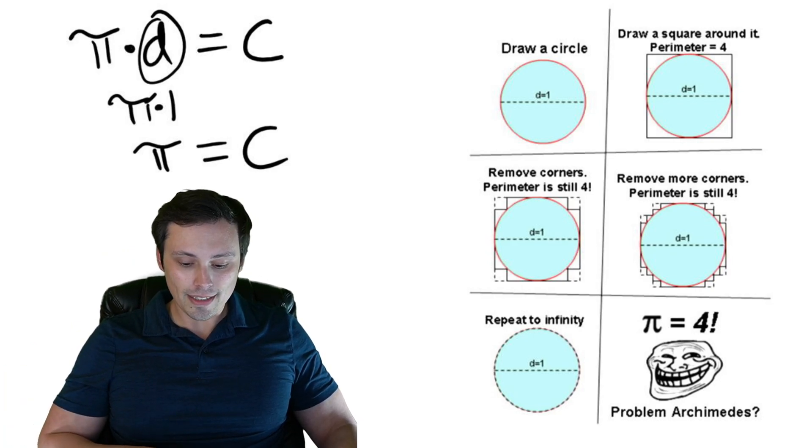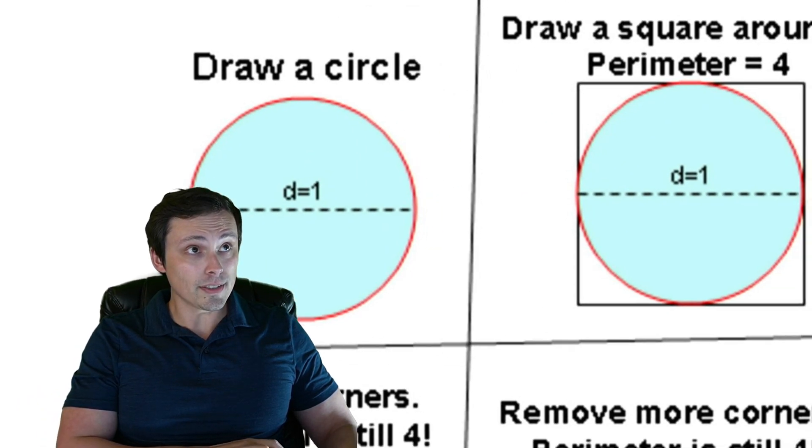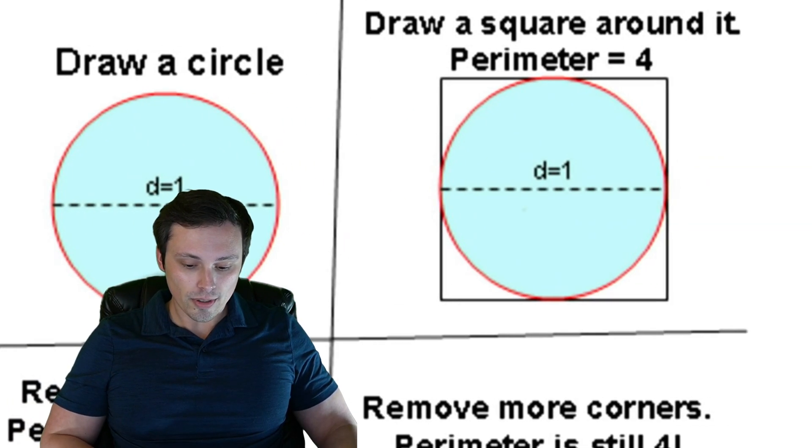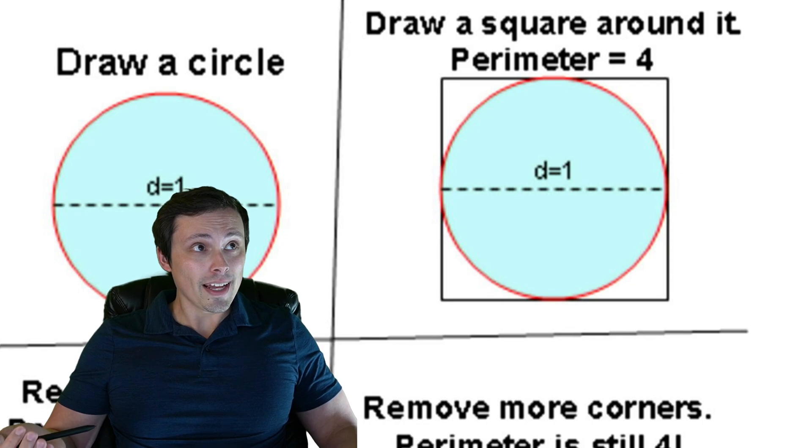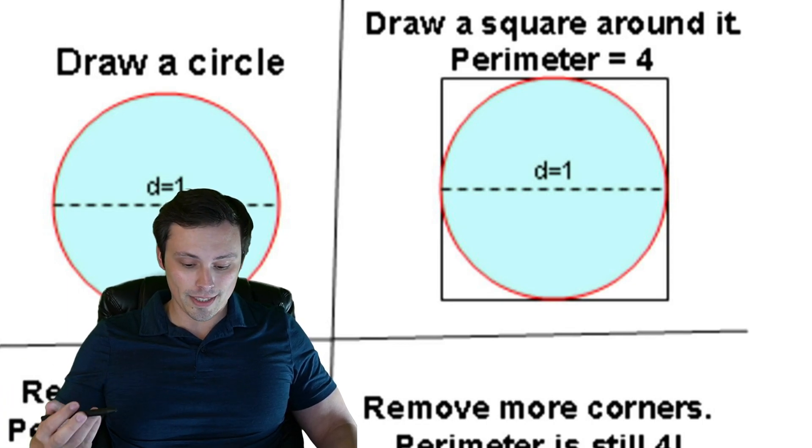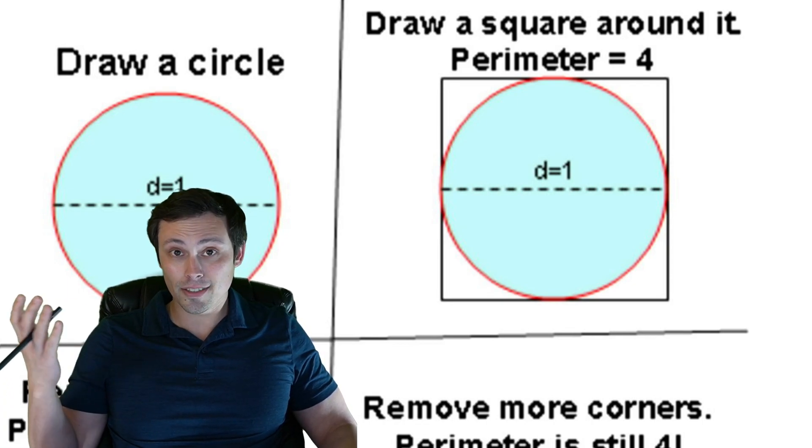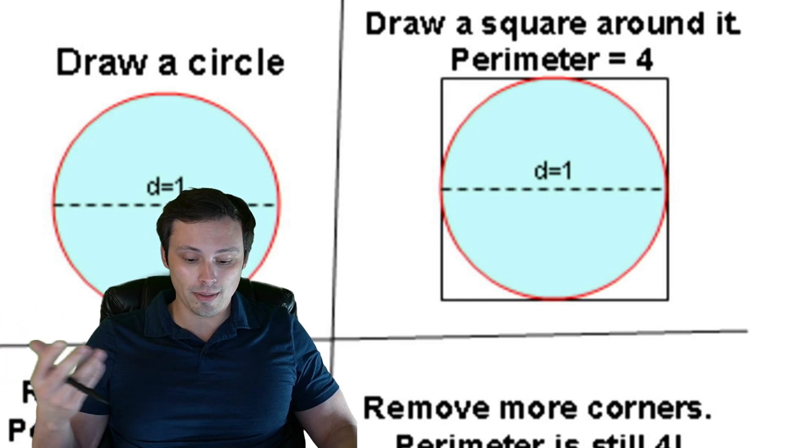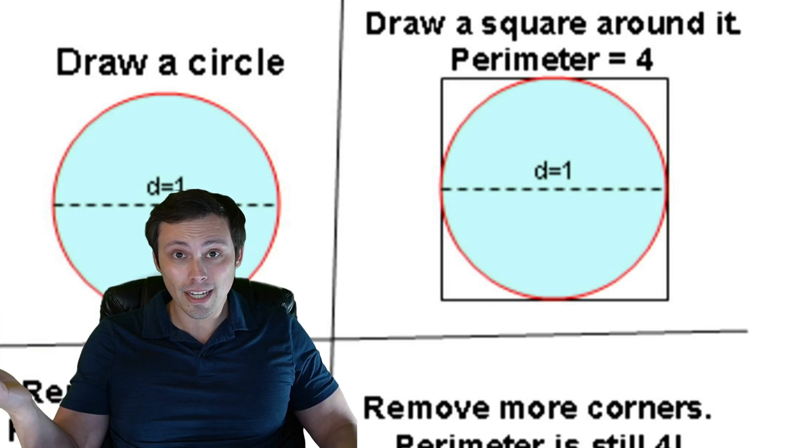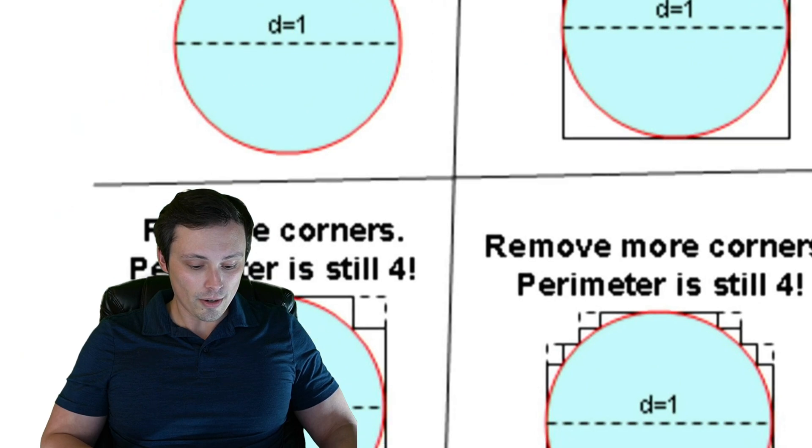The circumference is just the distance around the circle. Then they're going to take a square drawn around the circle. Now we have a square drawn around the circle and its perimeter is 4, because the diameter is 1, so the side lengths are the same as the distance across the circle. Perimeter is going to be 4. No issues with that argument whatsoever.